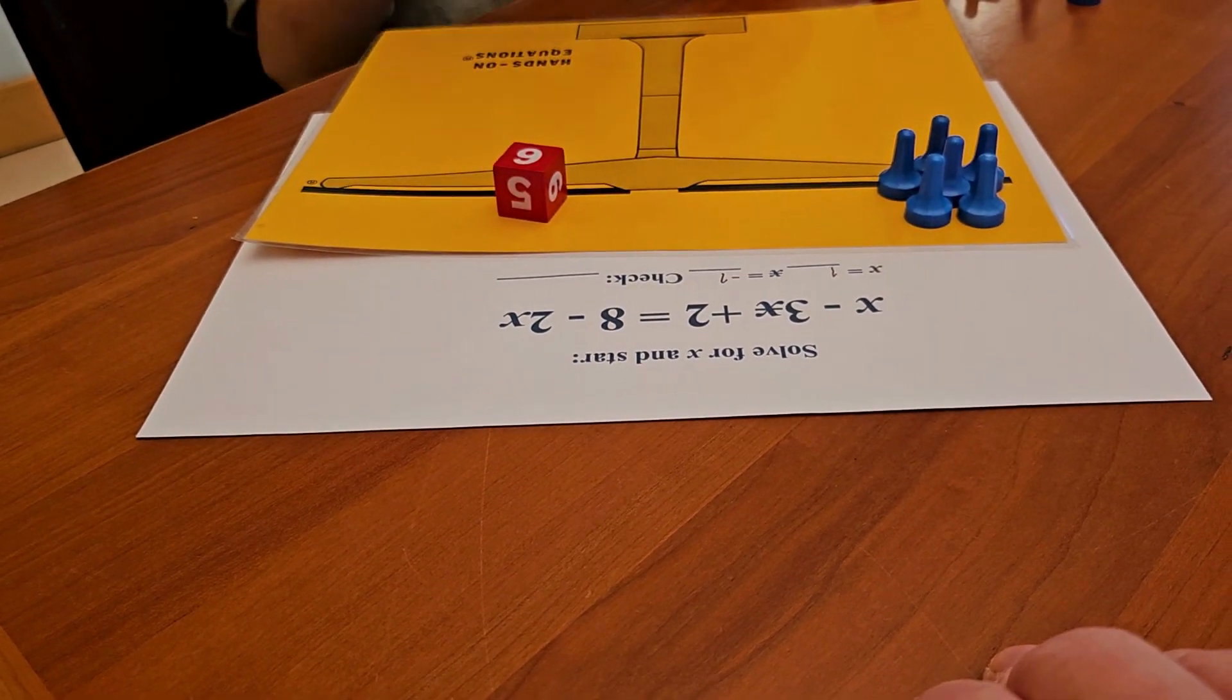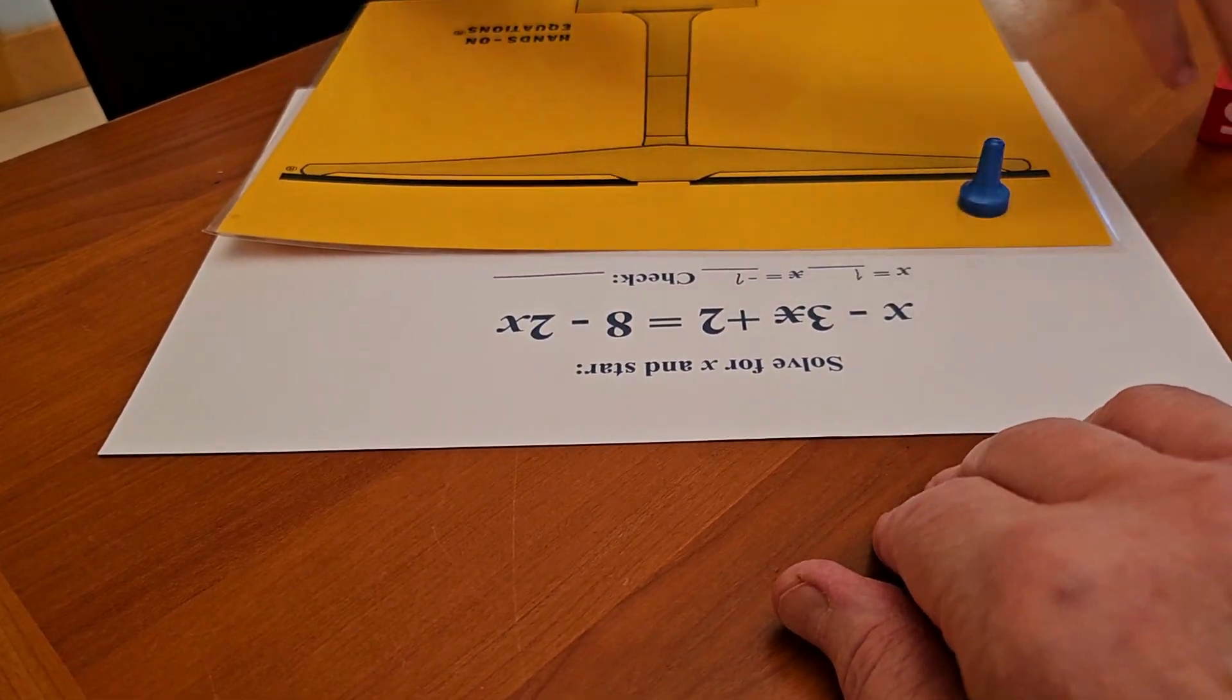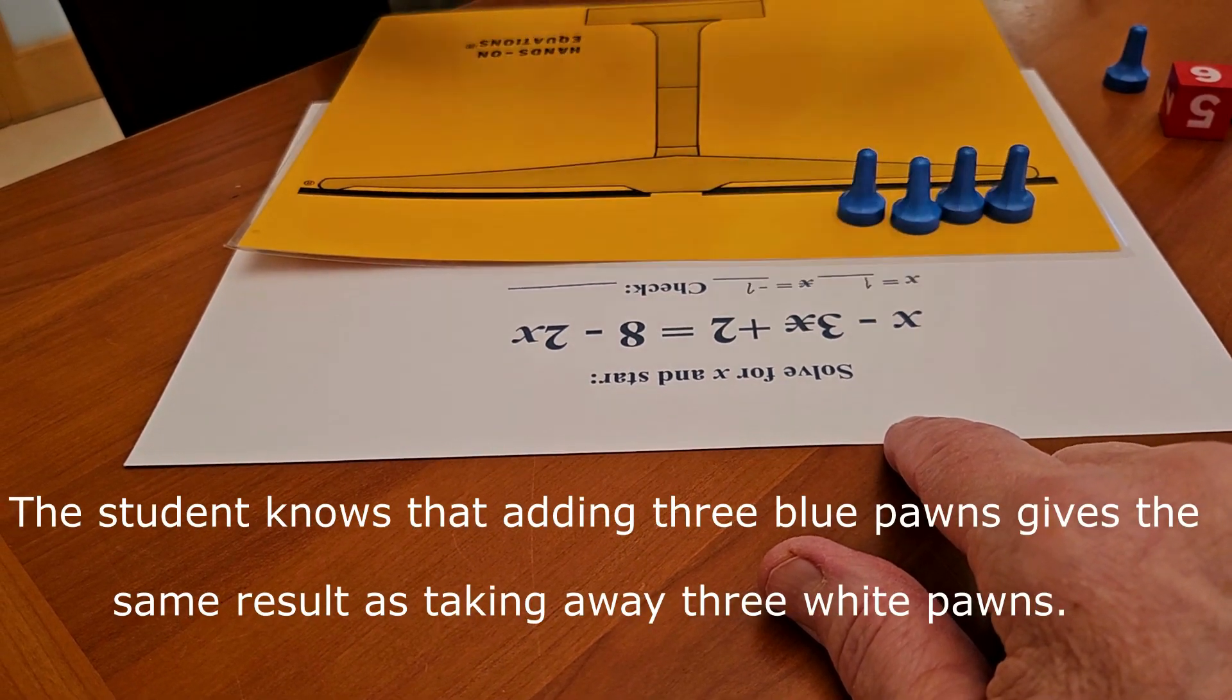Now would you clear the board? And now we want to set up the original problem one more time in order to do the check. So you have X, and you need to take away three stars. Okay.